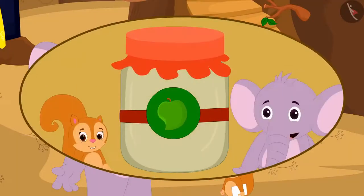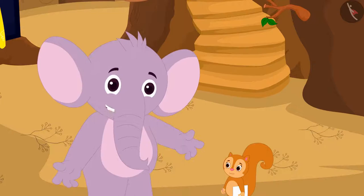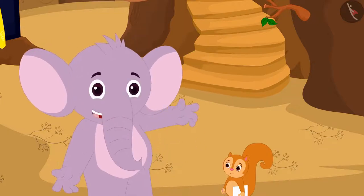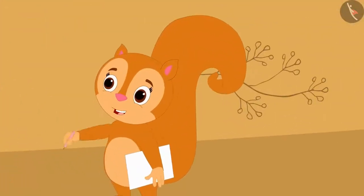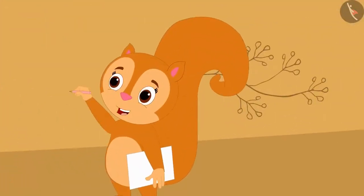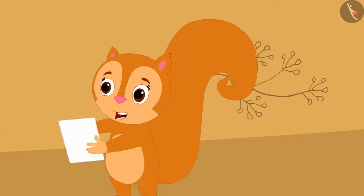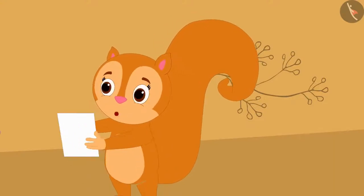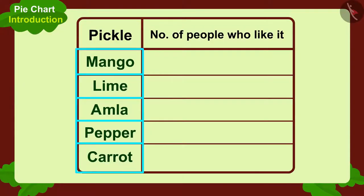Chanda and Appu want to start a pickle making business together. Chanda says, 'I think we should first find out which pickles people like.' Appu agrees: 'Let's find out by asking the villagers. I will write down the names of some pickles on a paper, then we will write the number of people who like that pickle in this table.'